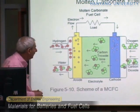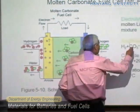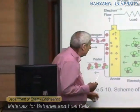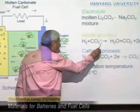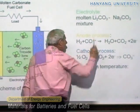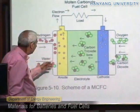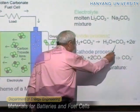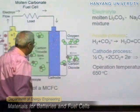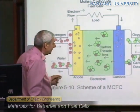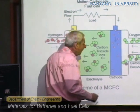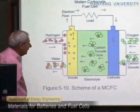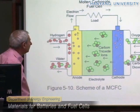The molten carbonate fuel cell (MCFC): the electrolyte is a molten solution of lithium carbonate and sodium carbonate, so it operates at very high temperature. The conducting species in the electrolyte is the CO₃²⁻ anion produced when we melt this mixture. At the anode, oxidation of hydrogen reacts with CO₃²⁻ to form water and CO₂. At the cathode, oxygen reacts with CO₂ to form CO₃²⁻. This type is also not very much used anymore.